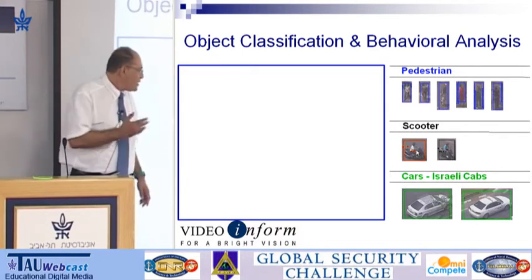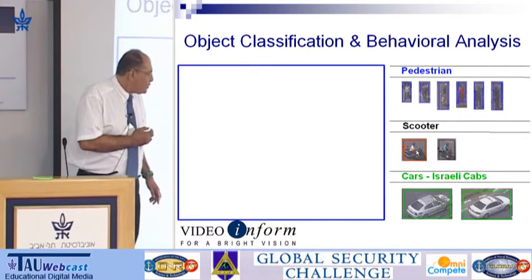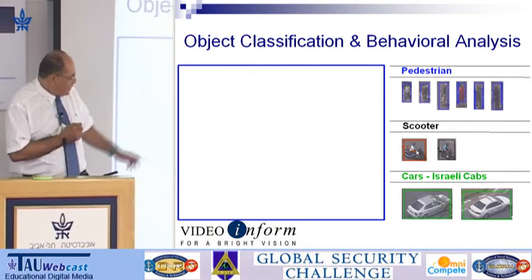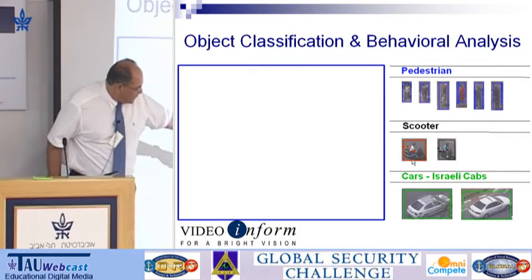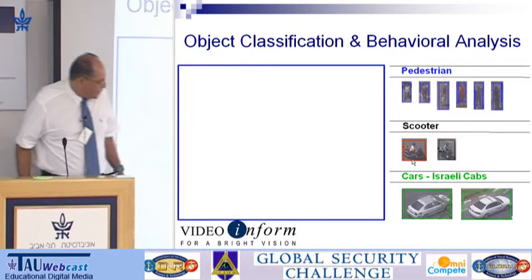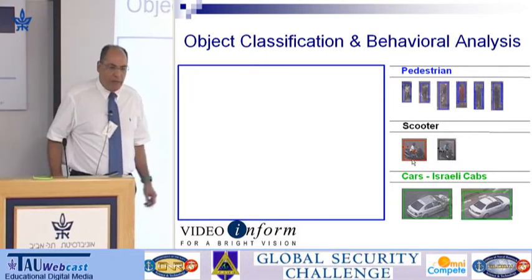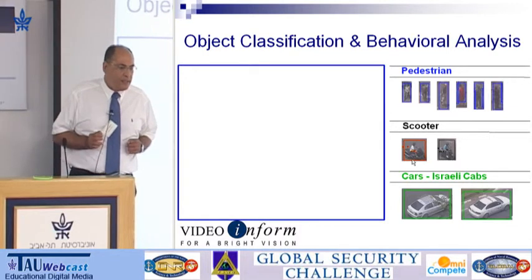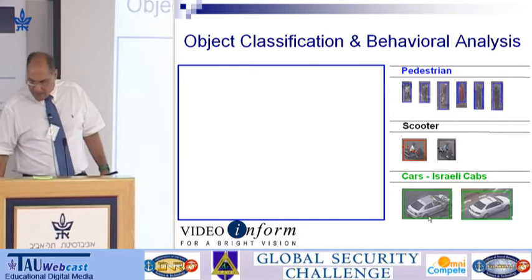Here you can see a scooter marked in red, because once we understand the nature of the object we can track it and see the direction it moves or its speed. It was marked in red because it was over-speeding. You can also see down there Israeli cab taxis — one has a roof rack, not the same manufacturer — but cognitively we understand those are Israeli cabs, just as humans would.